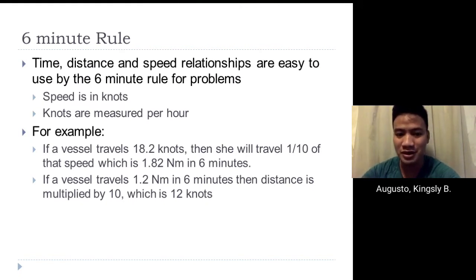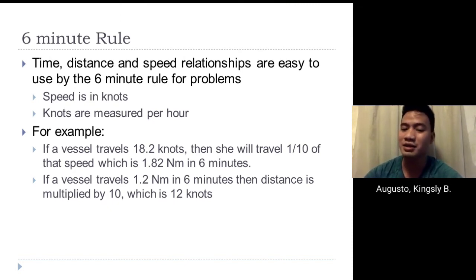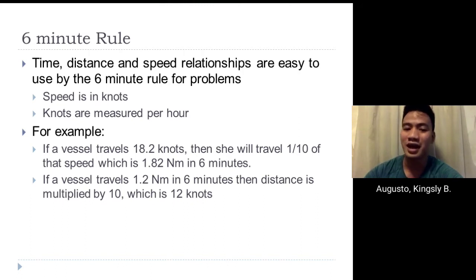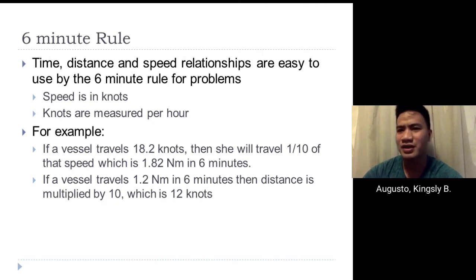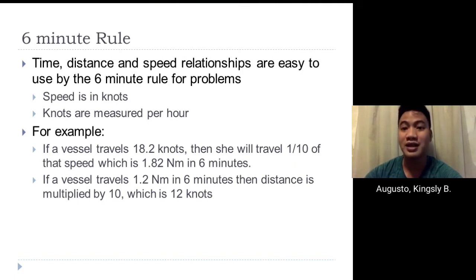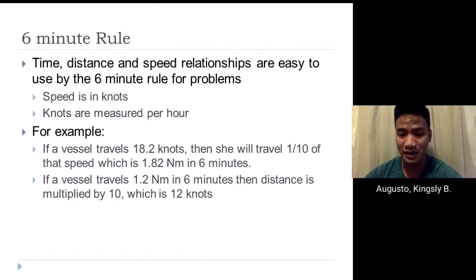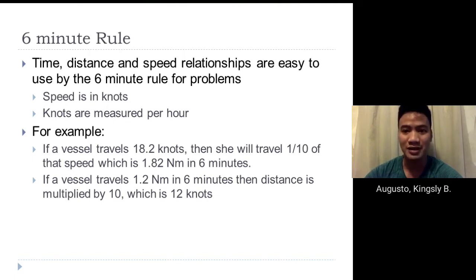We should also consider the six-minute rule when doing manual radar plotting. Time, distance, and speed relations are easy to use with this rule. Speed is measured in knots per hour. For example, if a vessel travels 18.2 knots, she will travel one-tenth of that — 1.82 nautical miles — in six minutes. Conversely, if a vessel travels 1.2 nautical miles in six minutes, the speed is 1.2 multiplied by 10, which is 12 knots.